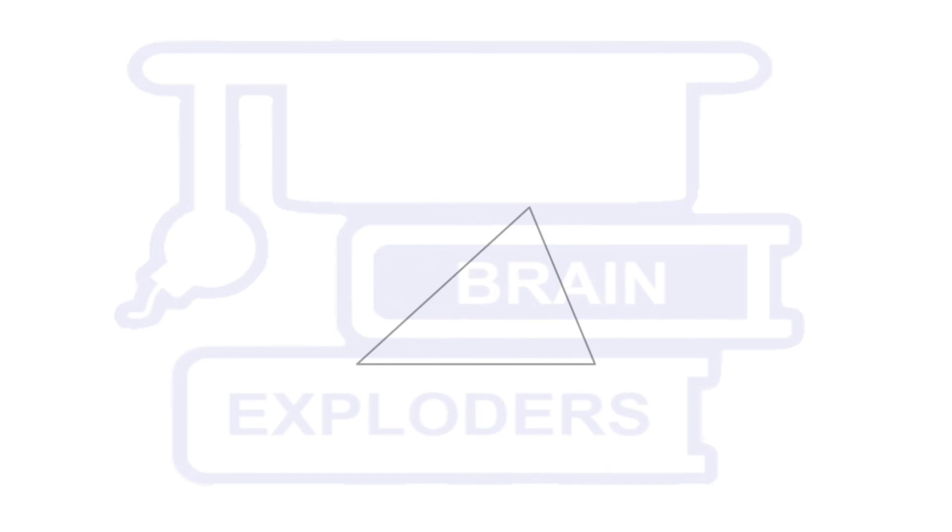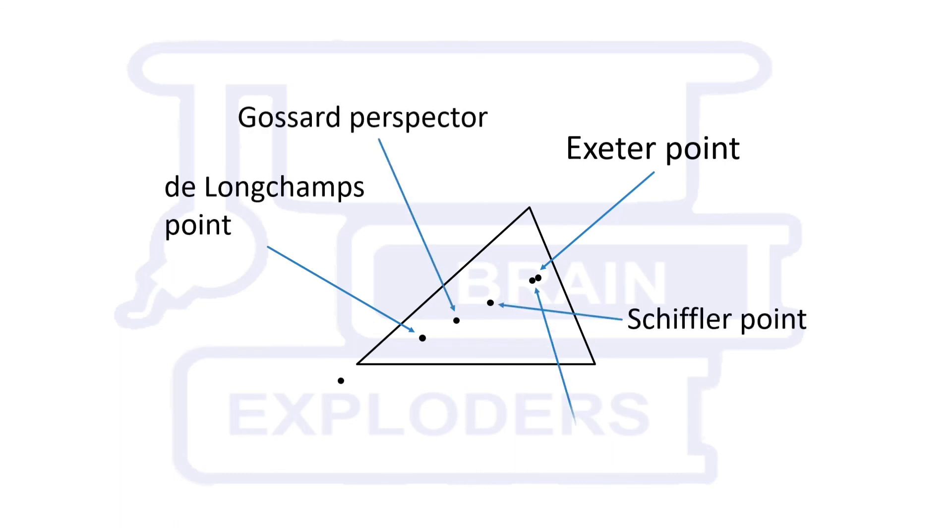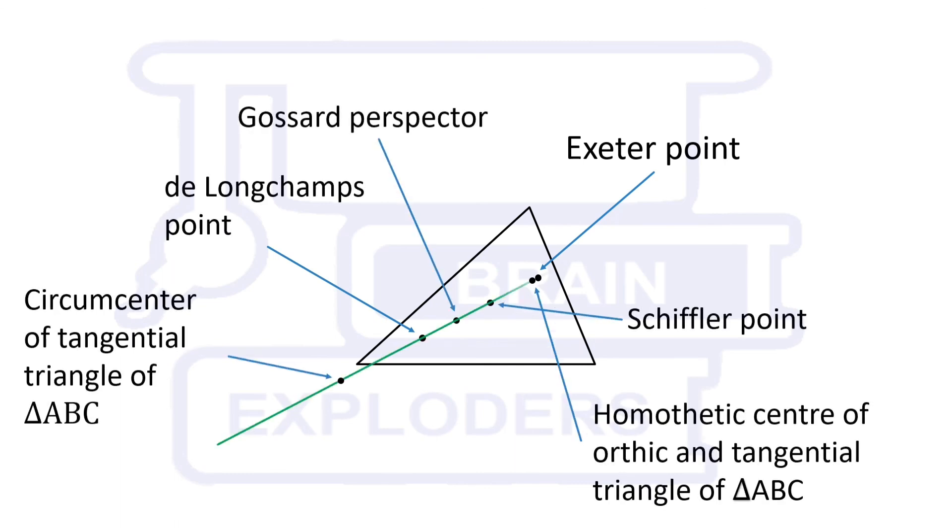All these points which are discussed in this video are collinear and line passing through these points is called Euler's line. But there is an important point which does not lie on this line. This point is incenter.